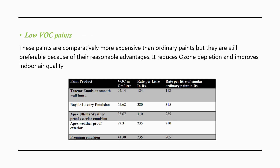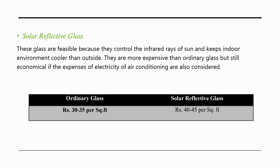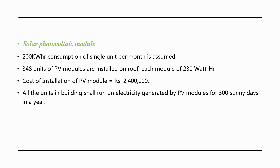Low VOC paints are comparatively more expensive than ordinary paints but are preferable due to their reasonable advantages — they reduce ozone depletion and improve indoor air quality. Solar reflective glass controls infrared rays from the sun and keeps the indoor environment cooler than outside. Though more expensive than ordinary glass, they are economical when electricity costs for air conditioning are also considered. Cost comparisons for both paints and glass are shown, along with the cost of installing a solar photovoltaic module.